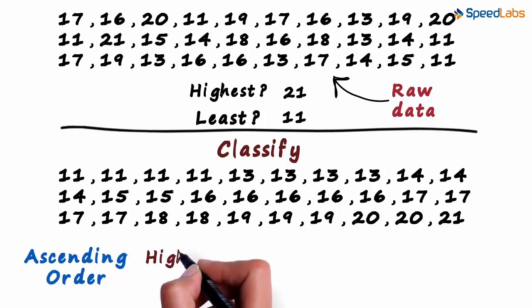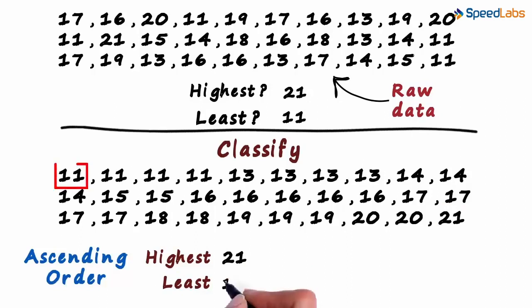What is the highest score? The highest score is the last number in the data, 21. What about the least marks scored? The least marks scored will be the first number you can see in the list, which is 11.